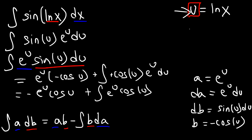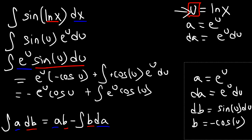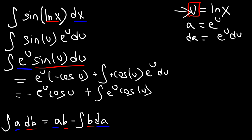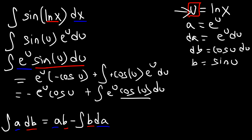Now we're going to use integration by parts again on this new integral. We use the same letters: a equals e to the u, so da is e to the u du. And db is going to be cosine of u du, so b — the integral of cosine — is going to be sine u. Applying the formula to just this part, it's going to be plus a times b: e to the u times sine u.